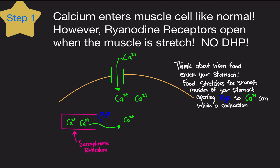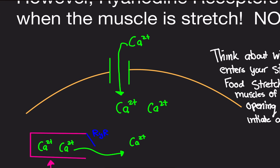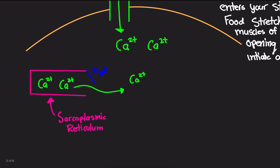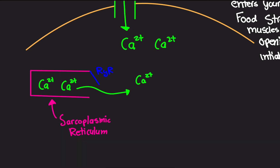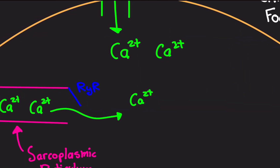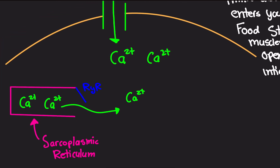Step one: calcium must enter the muscle cell. The calcium channels open into the muscle cell, so calcium floods in. In addition, we have the sarcoplasmic reticulum — the SR — which is basically a calcium storage center. It's gated by something called a ryanodine receptor, which acts like a gate that opens and closes. When open, calcium can flow out into the sarcoplasm of the muscle cell.